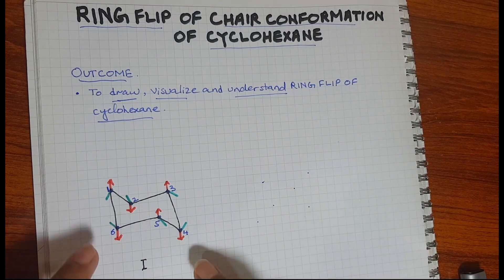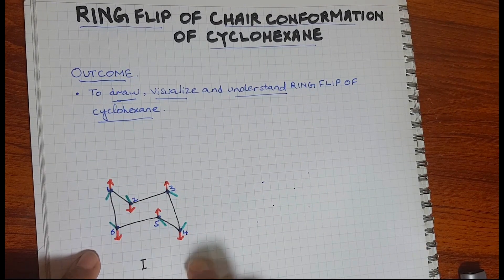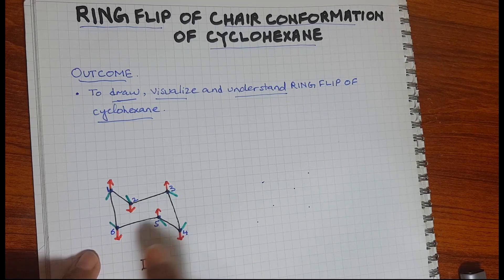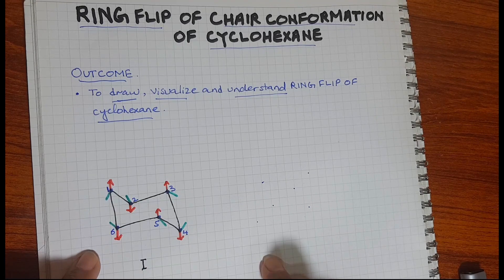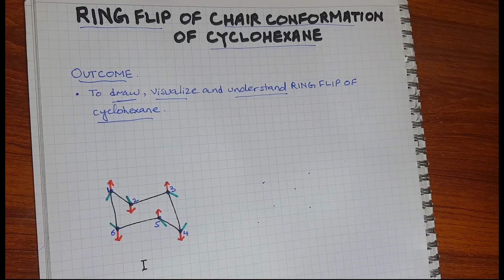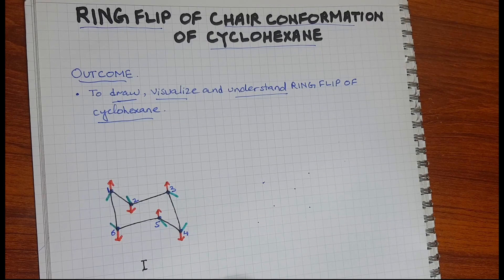The structure of cyclohexane is quite dynamic in the sense that it is able to interconvert from one form of chair conformer, which is stable, to another form of chair conformer which is equally stable. This interconversion from form 1 of chair conformer to form 2 is known as ring flip. It happens due to the ease of rotation about its carbon to carbon single bond.